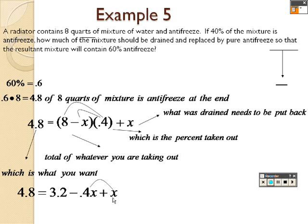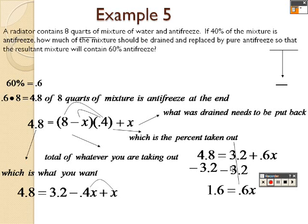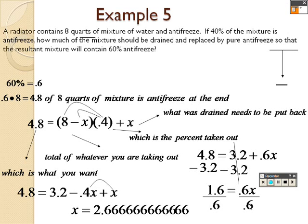Negative 0.4 plus 1 is positive 0.6. I minus a 3.2 on both sides to give me a 1.6 equals 0.6x. So I divide by 0.6 on both sides, and I end up with 2.66 or 2 and 2 thirds.